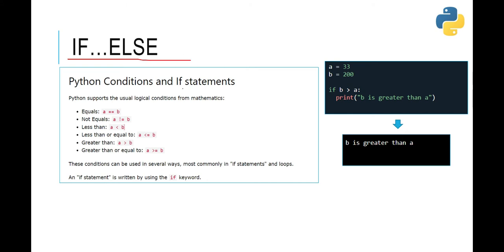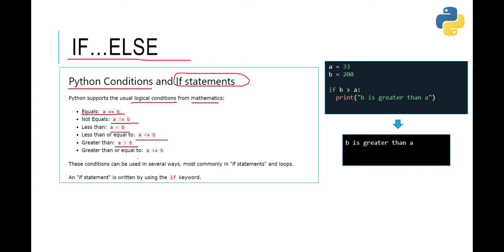As you know, if/else works like: if some condition is true or false, based on that we execute certain lines of code. There are many flavors of if/else statements, and there are also some ways to write them in shorthand form in Python, which we will look at in upcoming slides. First, let's look at Python conditions, because if statements work based on conditions. Your programming language should have support for the usual logical conditions from mathematics — for example, if a is equal to b, not equal, less than, less than or equal to, greater than, or greater than or equal to.